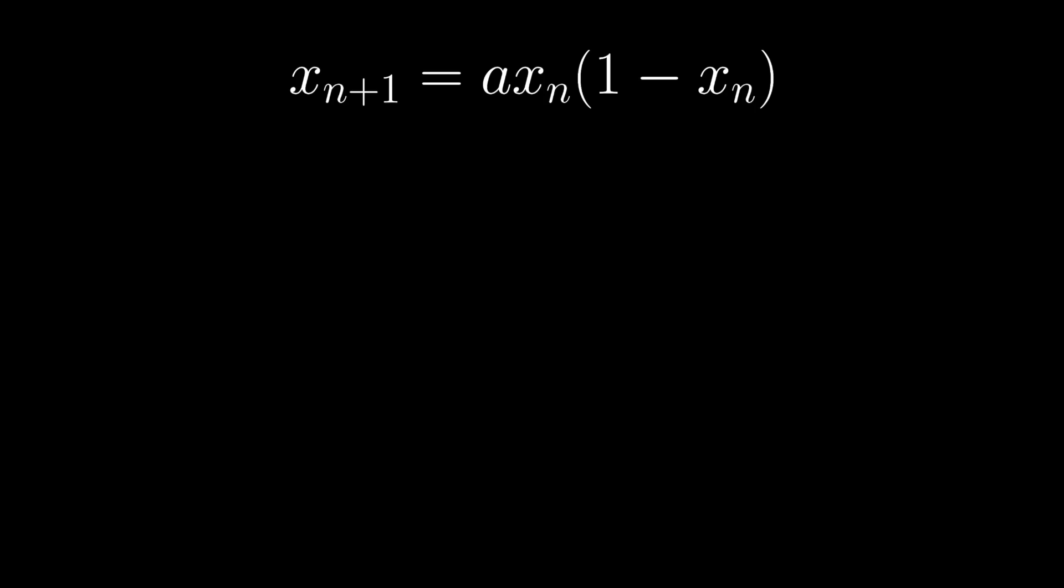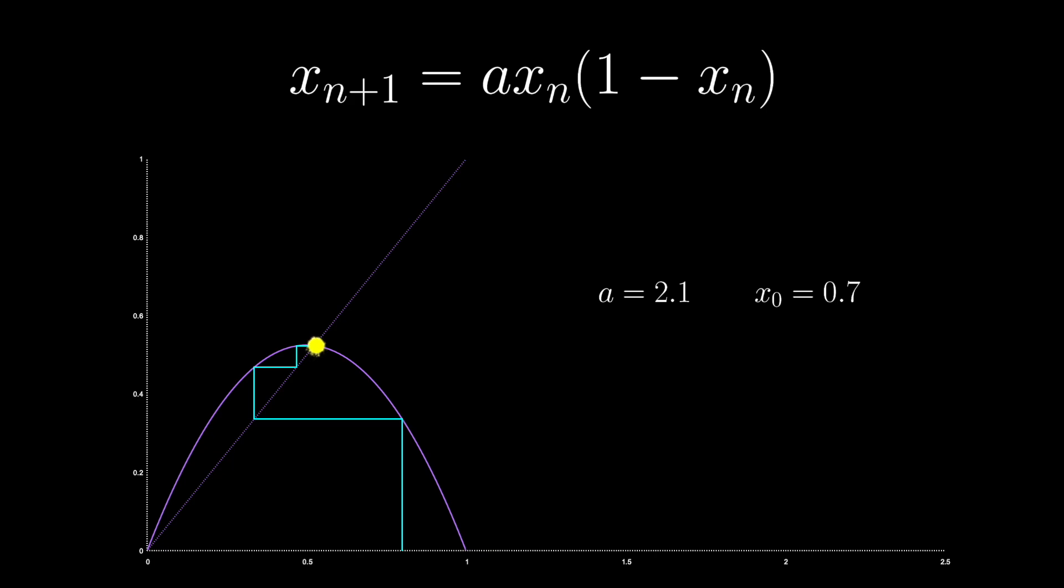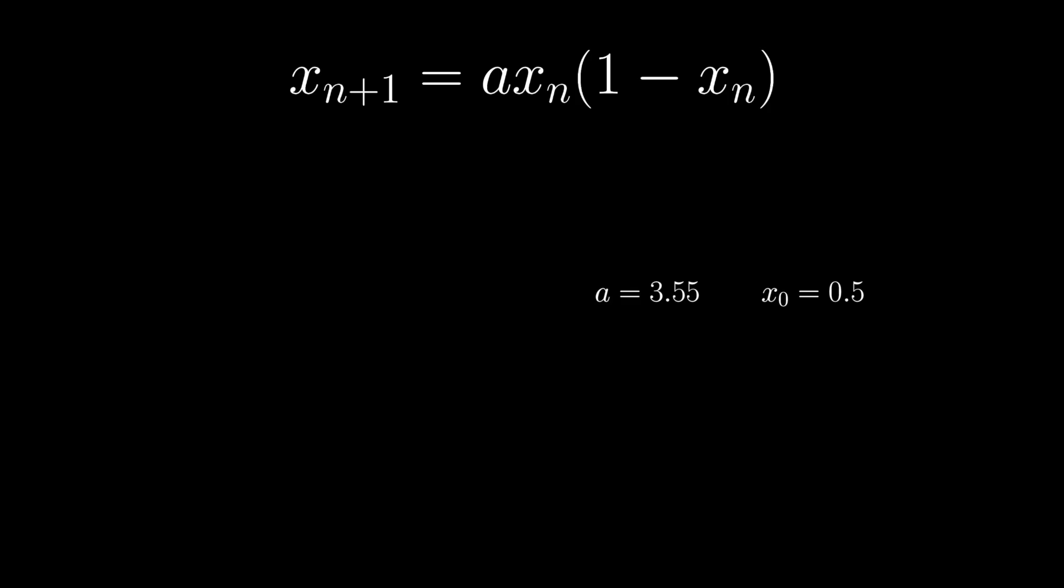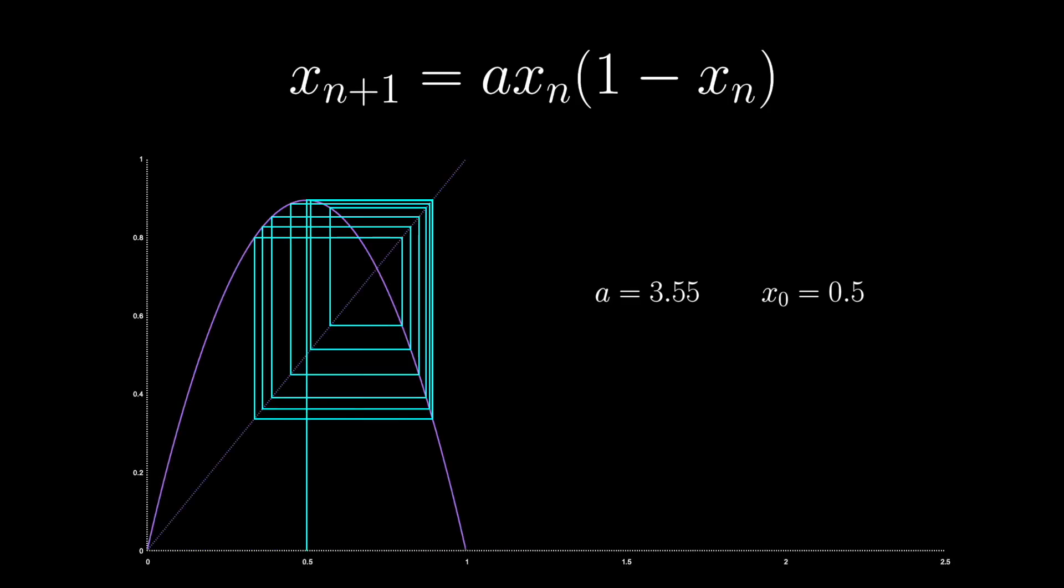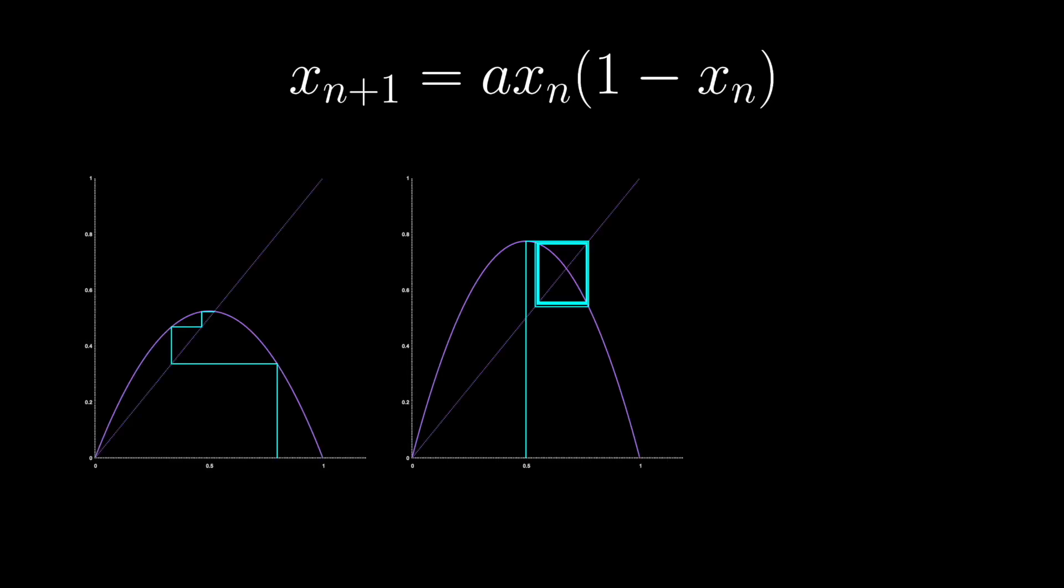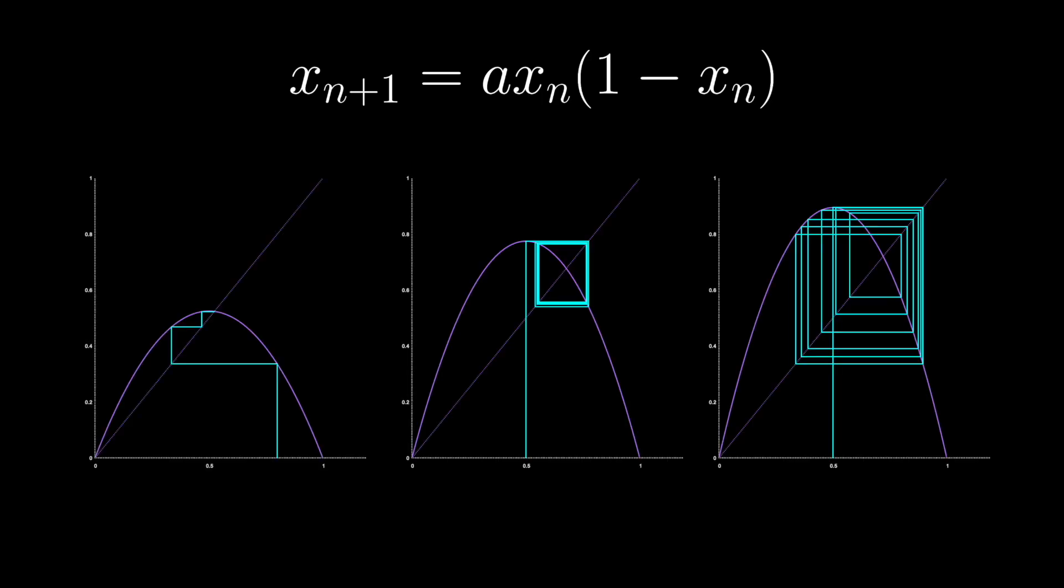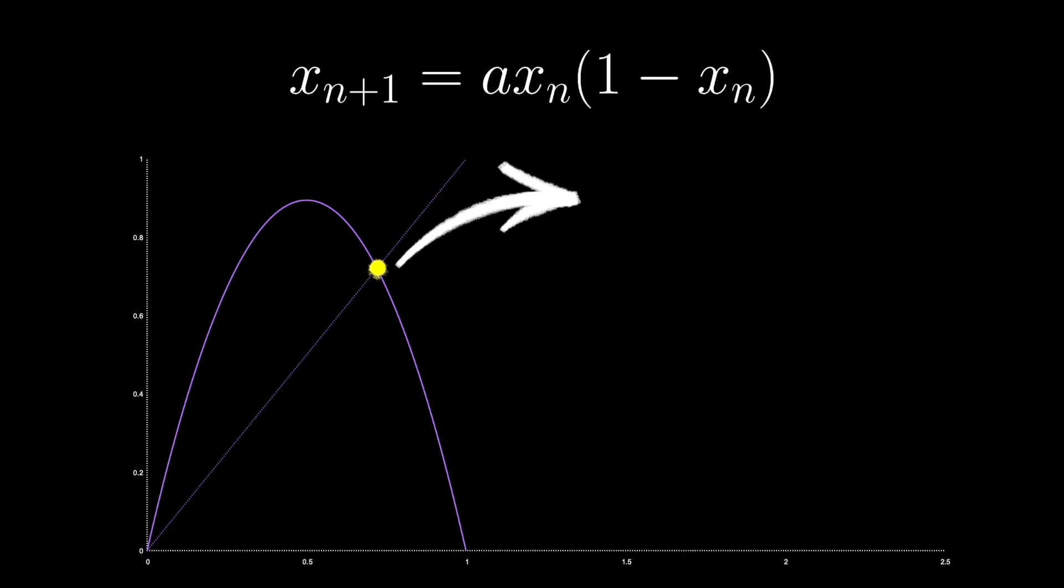Recall that the logistic map involves repeating this quadratic function over and over again. For some values of A, X converges to a fixed point. For others, it settles in a cycle of points. For still others, it bounces around chaotically, never quite settling down to a point or cycle. The fixed points, cycles, and chaos are different kinds of attractors for this map. It can also diverge off to infinity for some values, but we're not going to worry about those today.